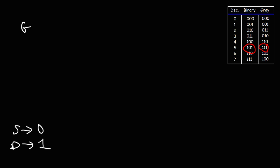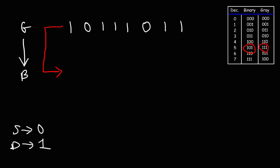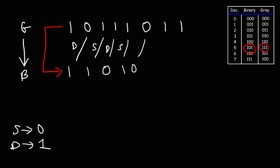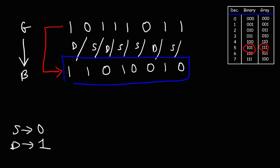This next example has eight numbers. The gray code is 101111011 — go ahead and try that. Rewrite the MSB: 1. Then 1 and 0 are different, so 1. 1 and 1 are the same, so 0. 0 and 1 are different, so 1. 1 and 1 are the same, so 0. 0 and 0 are the same, so 0. 0 and 1 are different, so 1. 1 and 1 are the same, so 0. The answer is 11010010.